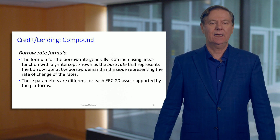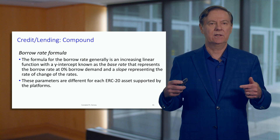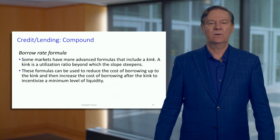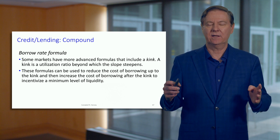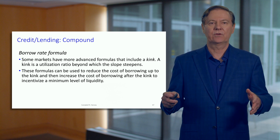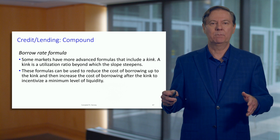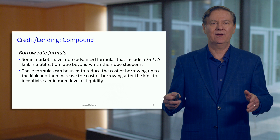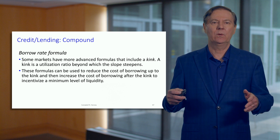There is also a slope that represents the rate of change in the rates. The slope and the intercept can be different for any ERC-20 asset supported on the platform. It's also possible that the formula is more complex than a linear formula — there may be a kink where, at some point, the slope becomes much steeper to discourage borrowing once you get close to capacity.